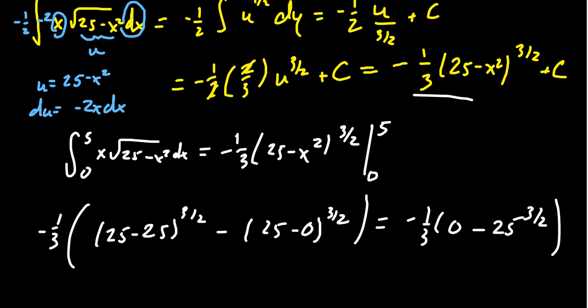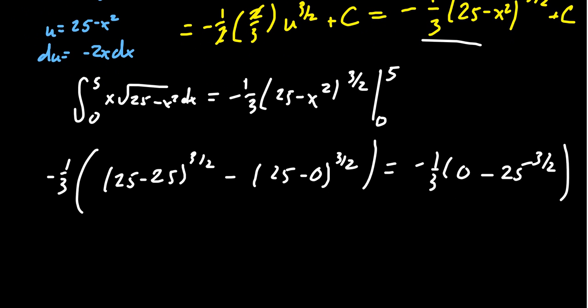Then you get 25 to the 3 halves. When dealing with rational exponents, I like to take the radicals first, the 1 half power. The 1 half power of 25 gives you 5, so you get 5 cubed, which is 125. We end up with negative 1 third times negative 125, which simplifies to 125 over 3, the area under this curve.